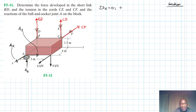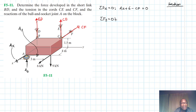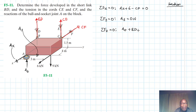Summation of forces in the X direction equals zero: Ax plus six minus CF equals zero. Summation of forces in the Y direction equals zero: Ay plus CE minus BD minus nine equals zero.